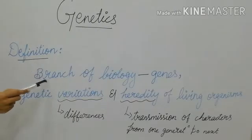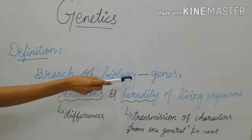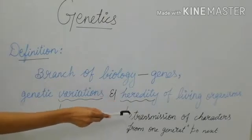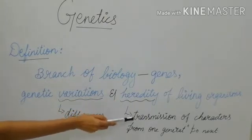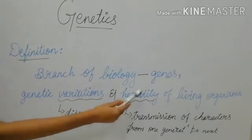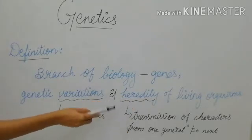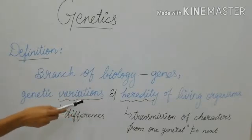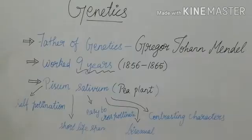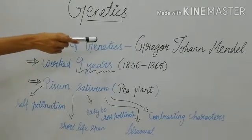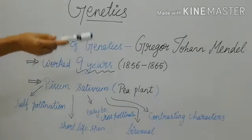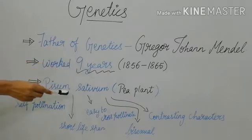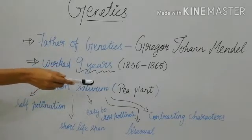Genetics is the branch of biology that deals with the genes, genetic variation, and heredity of living organisms. Heredity means transfer of characters from one generation to the next generation. Variation means differences — what are the differences in those characters. The father of genetics is Gregor Johann Mendel, and he was a parish priest.